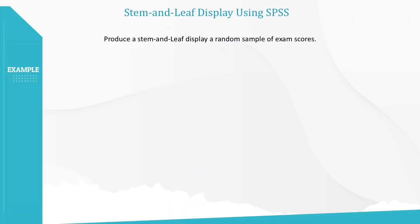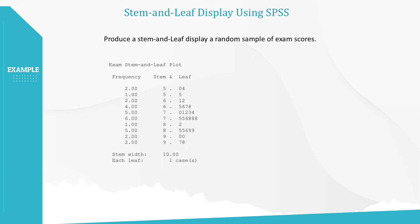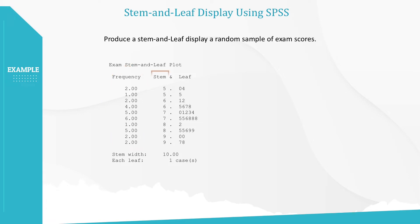Here is the output from SPSS. The first column shows the frequency, which is the count of each class. These two columns show stem and leaf. What is the lowest exam mark based on this display? Is it 5.0, 5.04, 50, or 50.4?